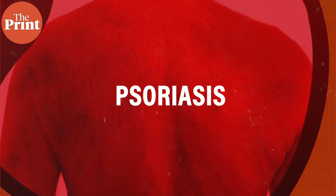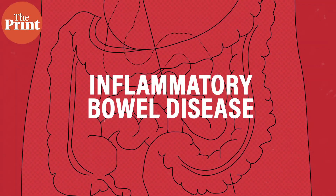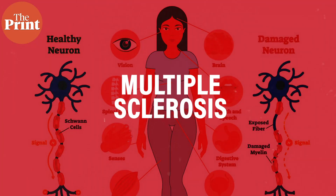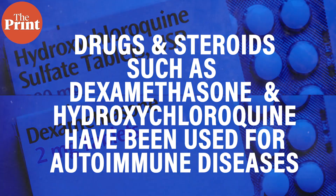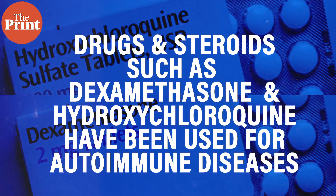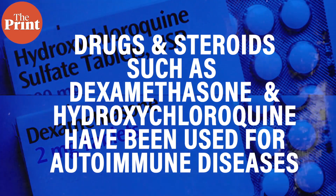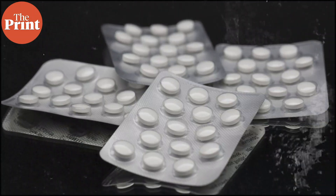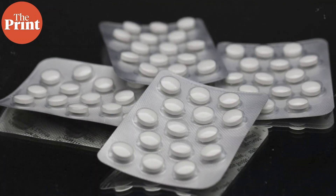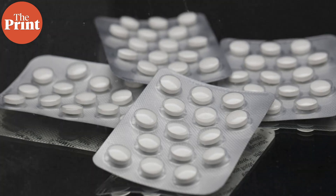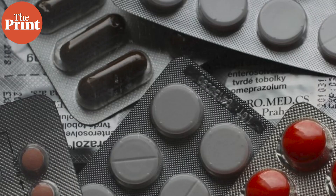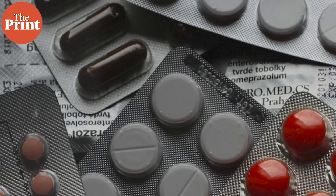Some autoimmune diseases include lupus and rheumatoid arthritis — the two most common ones — as well as psoriasis, inflammatory bowel disease, type 1 diabetes, multiple sclerosis, and even celiac disease. Many drugs and steroids such as dexamethasone and hydroxychloroquine have been used for treating autoimmune diseases.